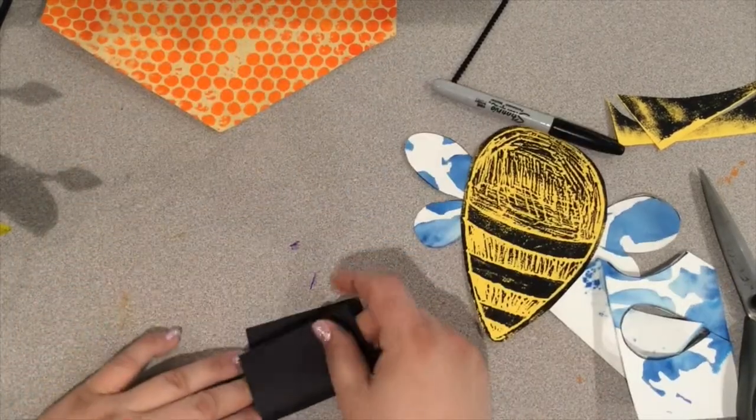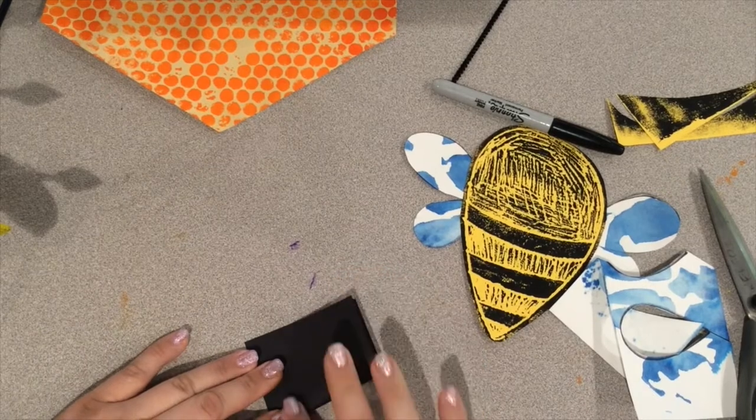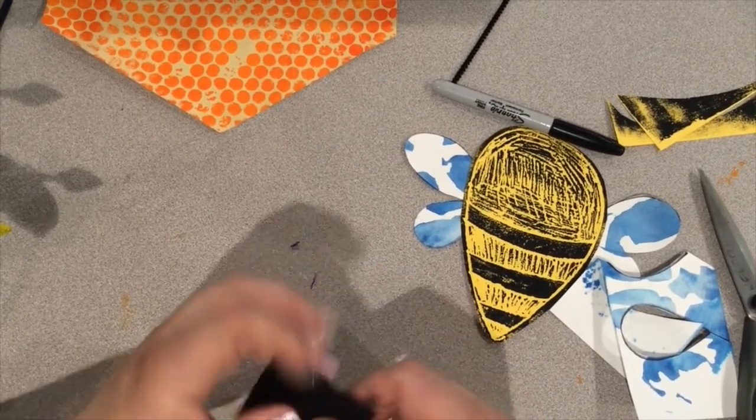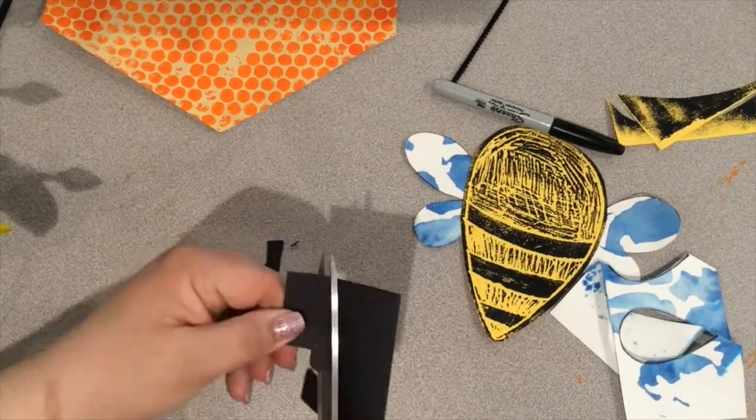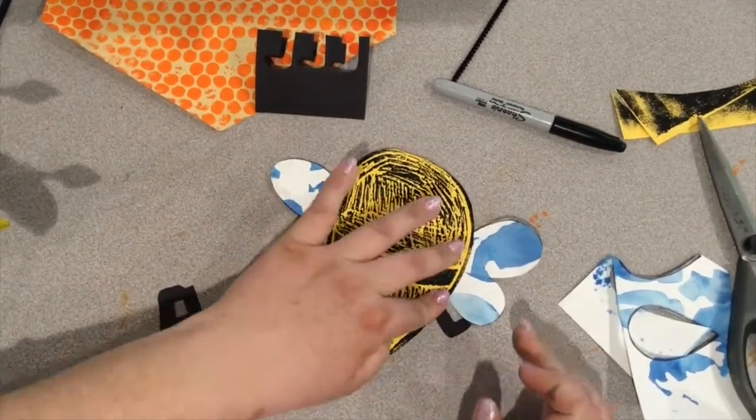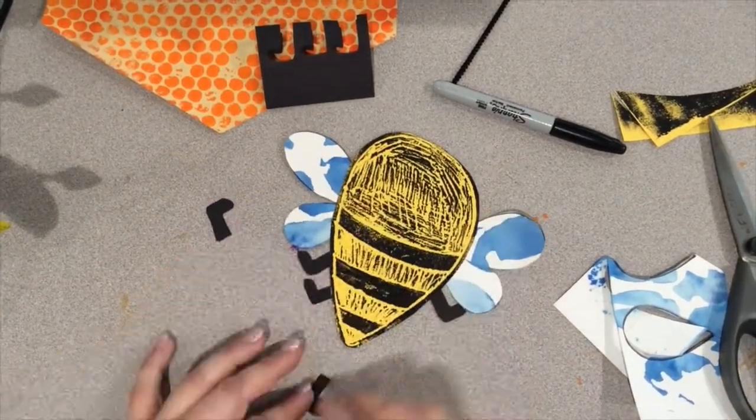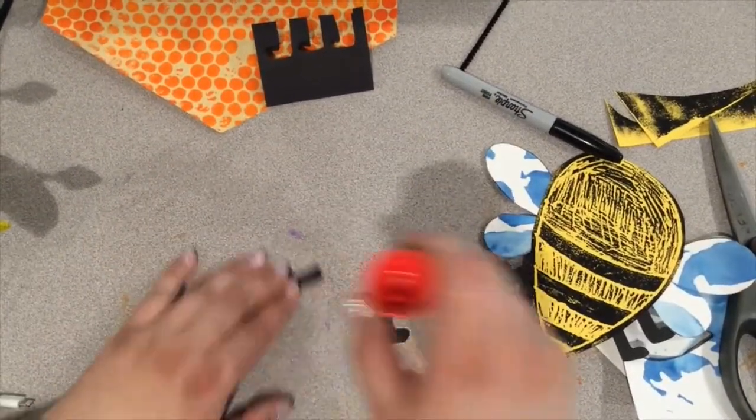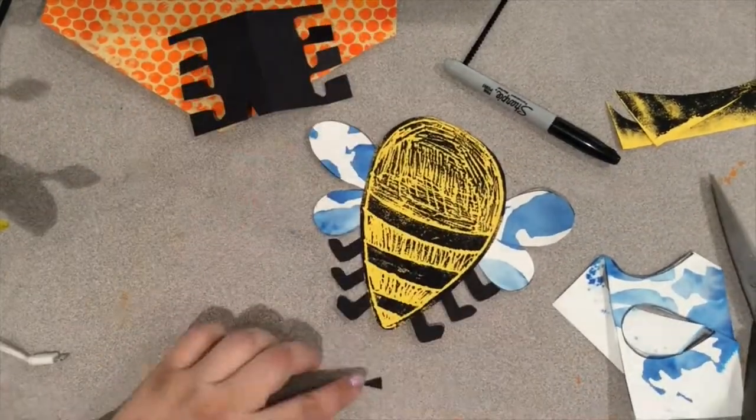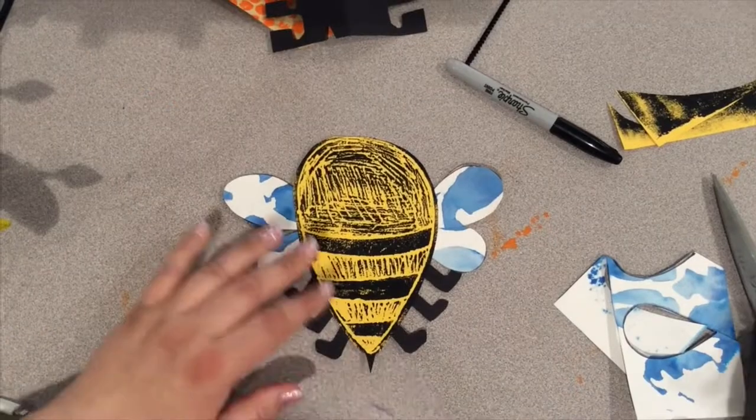Next, we're going to cut out six legs. I folded my paper in half so that I could draw three sets. After you have six legs cut, glue them onto your bee. You can even add a little stinger on the bottom if you want.